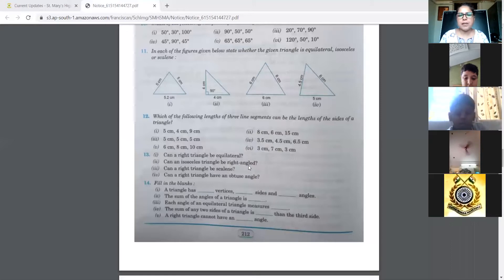Can an isosceles triangle be right angled? So this can be yes. We had one example here. So this is a right angle and it is an isosceles triangle also. The two sides are same. So here the answer will be yes.